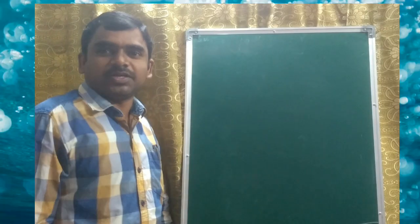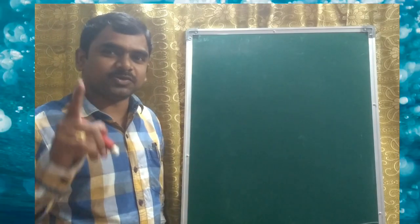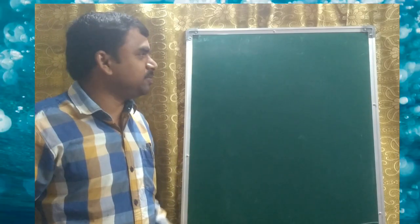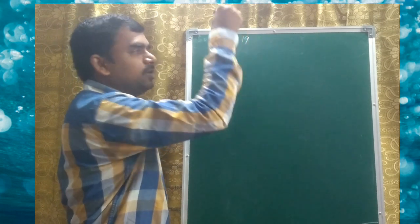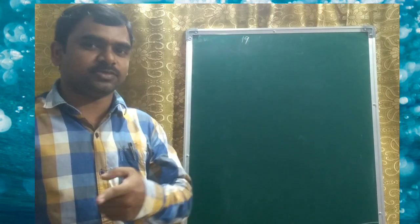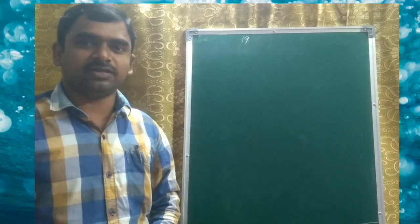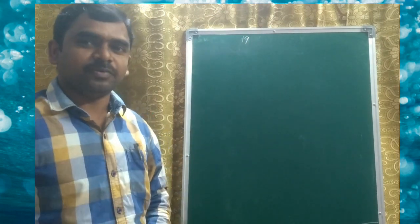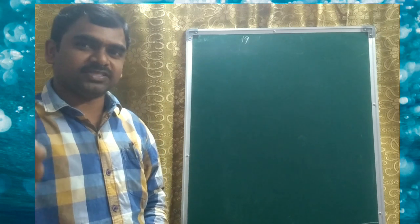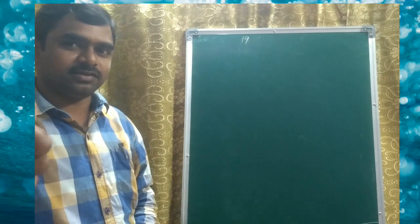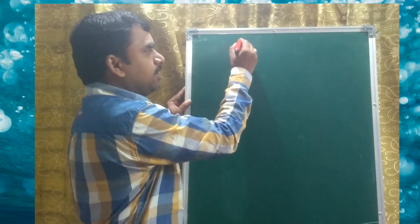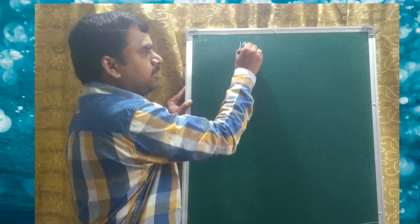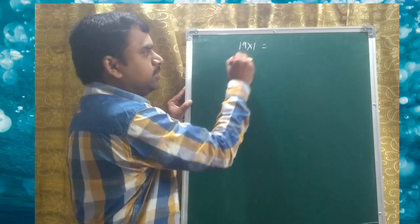Hi friends, this is Guna. This is a good technique called the 19 times table. Before that, please subscribe to my channel. Thank you. OK, so 19 times table — 19 into 1.